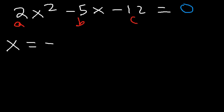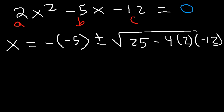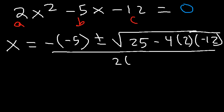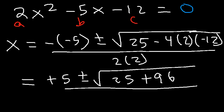Using the quadratic formula, x is equal to negative b — so b is negative 5 — plus or minus the square root of b squared, which is negative 5 squared, that's positive 25, minus 4 times a, which is 2, times c, which is negative 12, divided by 2a. So negative times negative 5 is positive 5. 2 times 12 is 24, and 4 times 24 is 96. Because we have two negative signs, it's going to be positive 96, divided by 2 times 2, which is 4.